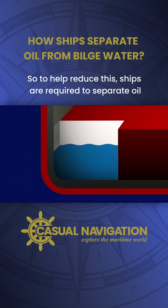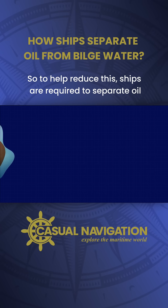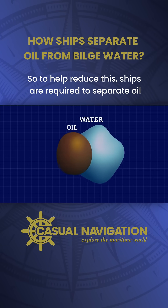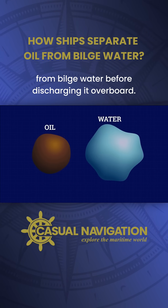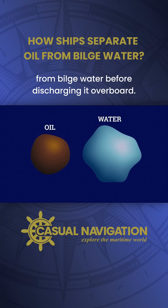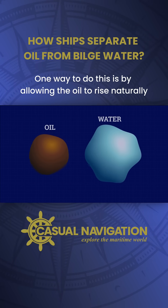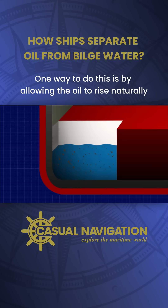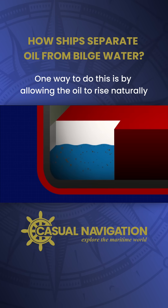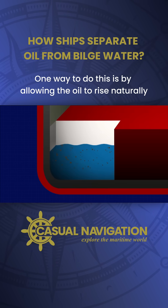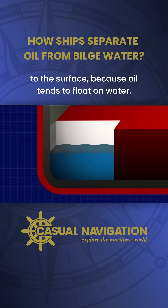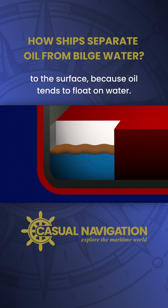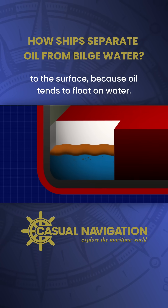So to help reduce this, ships are required to separate oil from bilge water before discharging it overboard. One way to do this is by allowing the oil to rise naturally to the surface, because oil tends to float on water.